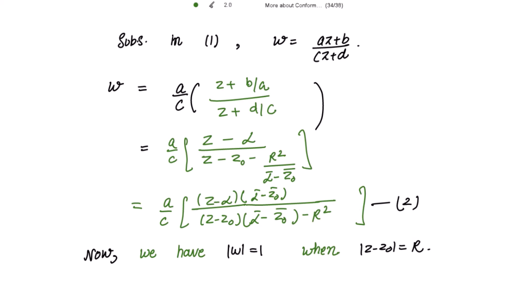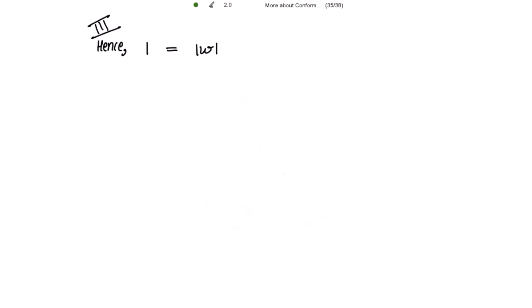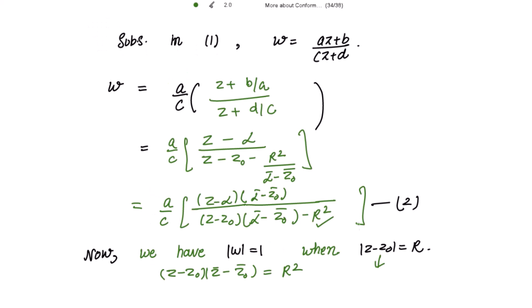Now, since |w| = 1 when |z - z₀| = r (the circle in the z-plane), we can write |z - z₀|² = (z - z₀)(z̄ - z̄₀) = r². This allows us to substitute r² in the expression. So for |w| = 1, taking the modulus of the complete expression for w: